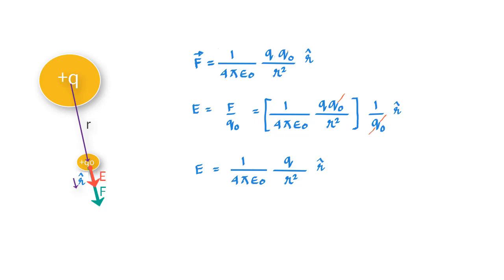Now you would have noticed that I have put a small r cap here which is just a unit vector indicating the direction of the field. So do not end up cancelling this r with this r. This is a more complete representation of the expression for electric field that includes the direction of E, and if you multiply by r cap the expression also indicates the direction of the field.